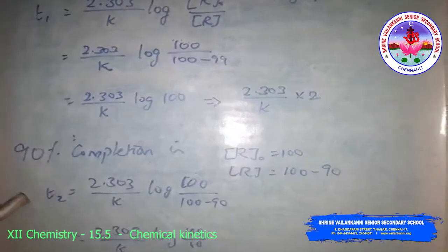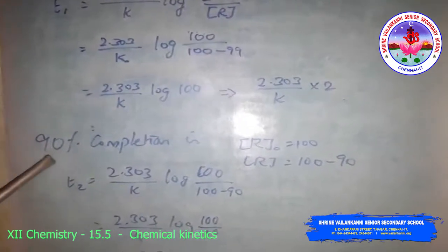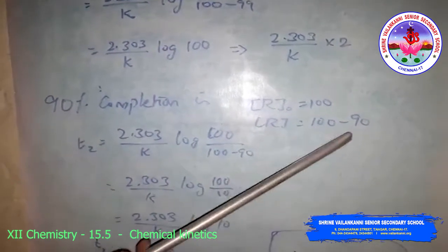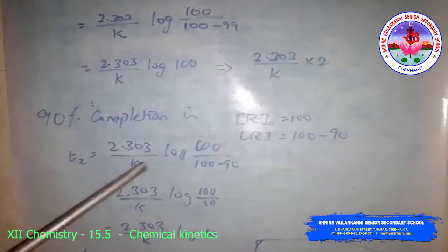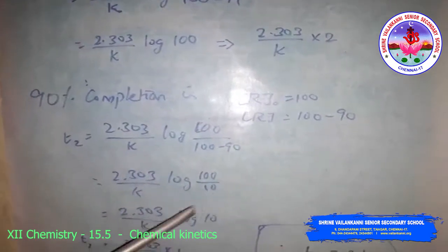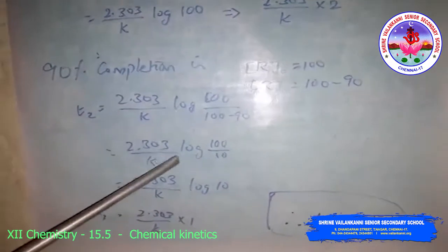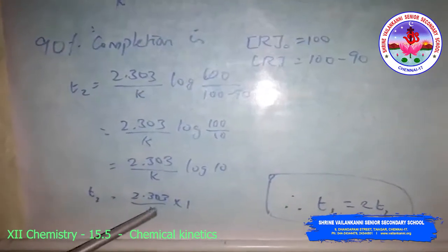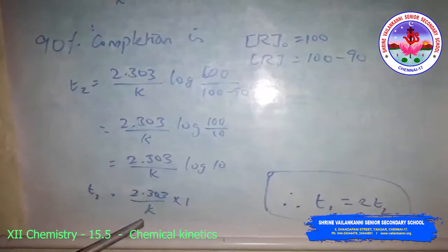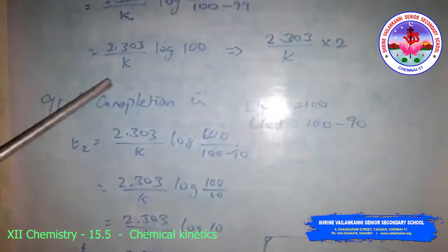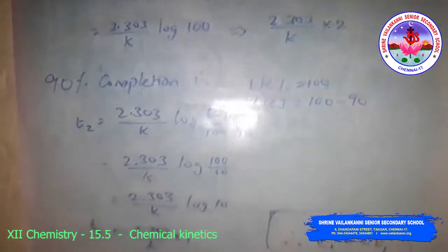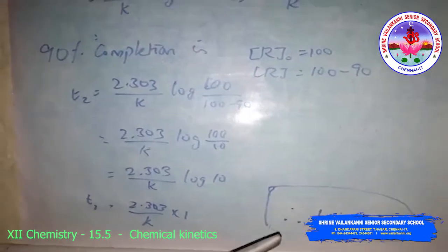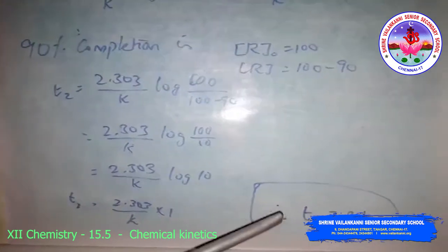For 90% completion: R₀ = 100, R = 100 − 90 = 10. So T₂ = (2.303/k) × log(100/10) = (2.303/k) × log 10. Since log 10 = 1, T₂ = 2.303/k. Therefore T₁ = 2·T₂, meaning the time required for 99% completion of a first order reaction is twice the time required for 90% completion.